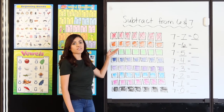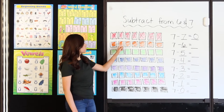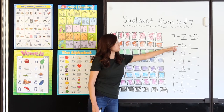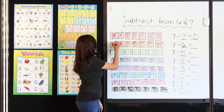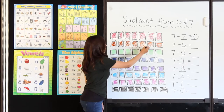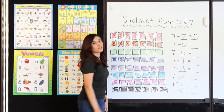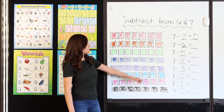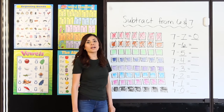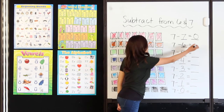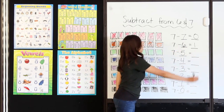I have 7 orange squares — 1, 2, 3, 4, 5, 6, 7. I'm going to take away 6: 1, 2, 3, 4, 5, 6. How many do I have left? Let's count: 1. I have 1 left. So 7 minus 6 equals 1. Good job.